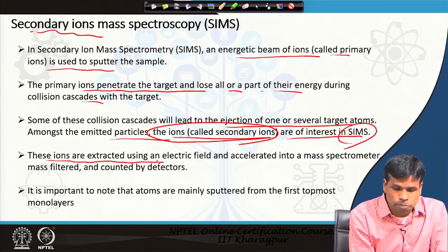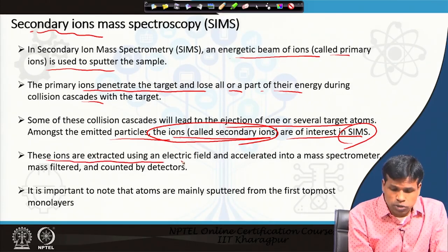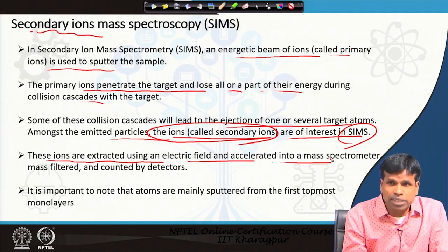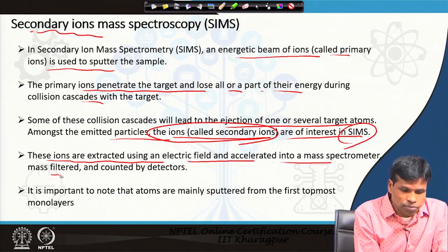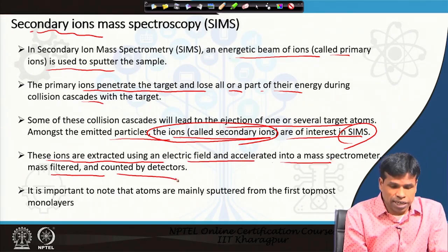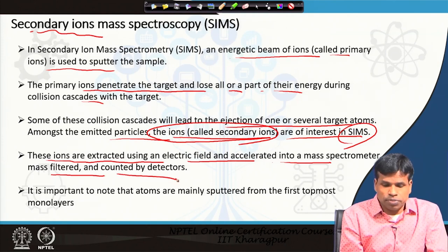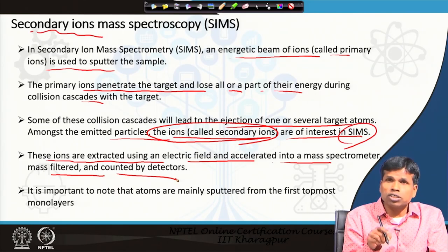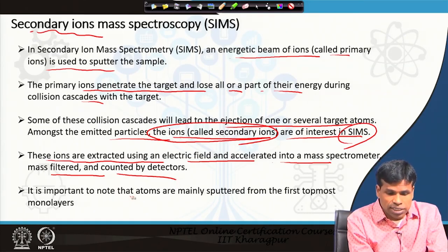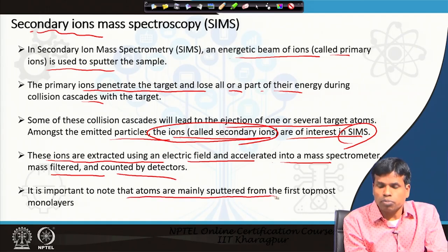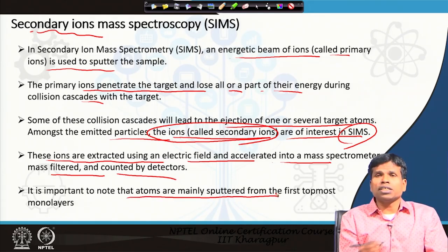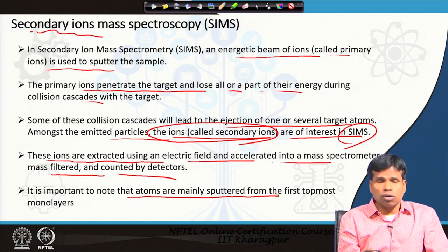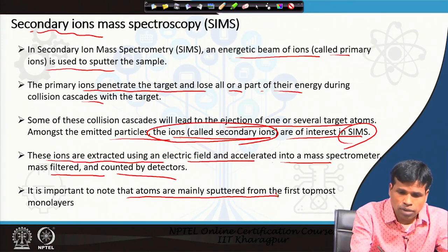The secondary ions are extracted using an electric field, accelerated to a mass spectrometer, mass-filtered, and counted by detectors. This yields the elemental composition of the surface, because atoms are mainly sputtered from the first few top layers — making SIMS a surface analysis technique.